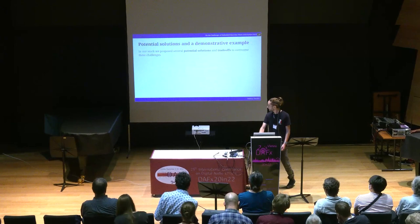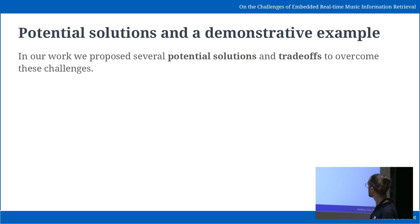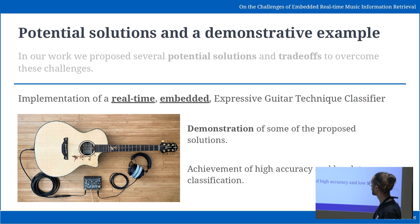We discussed several solutions — and some that are not really solutions but trade-offs we need to be aware of. After this discussion, we implemented a real-time classifier: in our case, a real-time embedded expressive guitar technique classifier — a system able to recognize the expressive technique a guitar player is using, such as bending the strings, muting the strings, and percussive techniques on acoustic guitar. This was used to demonstrate the validity of some of the proposed solutions, since we were able to achieve high accuracy in detecting and distinguishing these techniques.